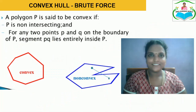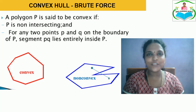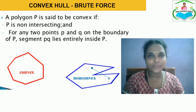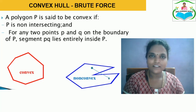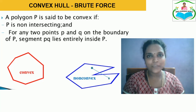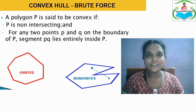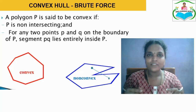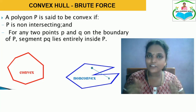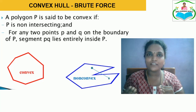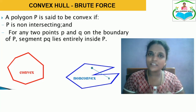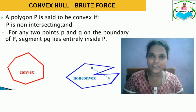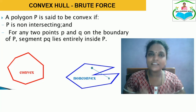Welcome to MSD Learning World. In this video we are going to see a convex hull problem which can be solved by brute force method. A polygon P is said to be convex when the polygon is non-intersecting, and when we take any two points P and Q inside the plane, the line drawn between them completely exists inside the polygon. If the line comes outside the polygon, then the polygon is said to be non-convex. We will see how to create a convex hull polygon such that all the points given in a space exist inside the polygon using a brute force approach.